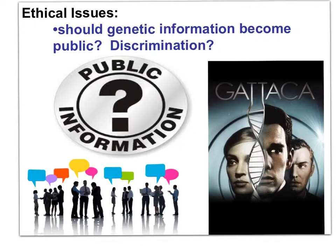The Human Genome Project successfully sequenced human DNA for identifying potential disease and other genetic characteristics. Companies now offer to sequence one's entire genome for approximately $1,000. This raises many ethical issues — for example, should genetic information become public, and how does society prevent discrimination based on one's genetic profile?